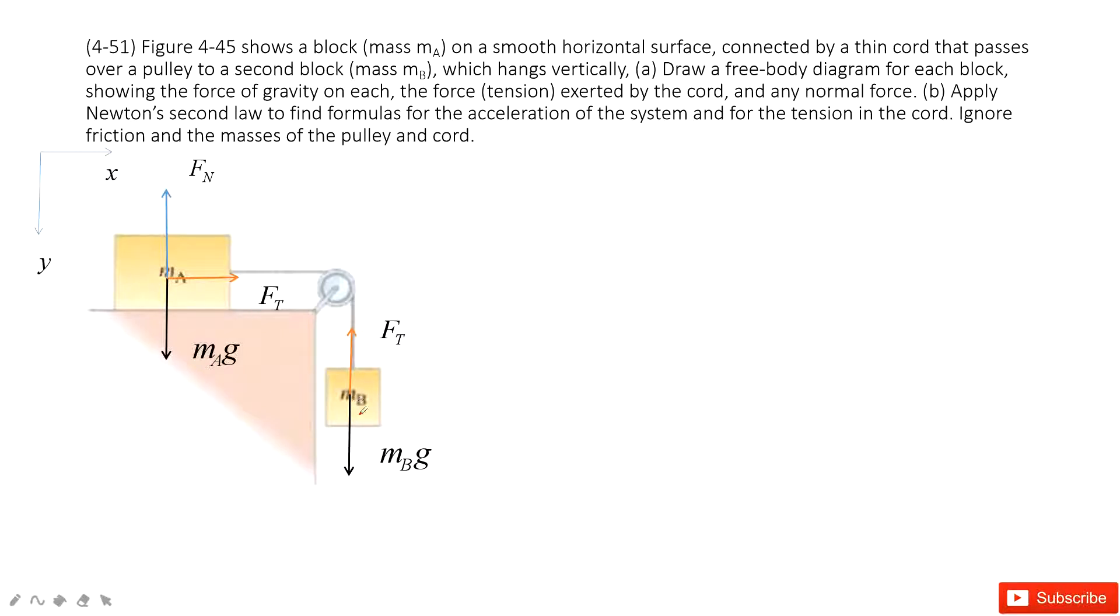Look at object B. The net force is the gravity minus the tension equals the mass times acceleration. So mass is m_B, acceleration is a. Next, we look at object A.